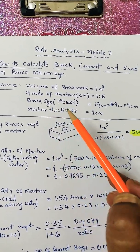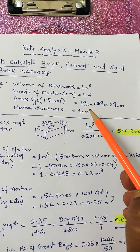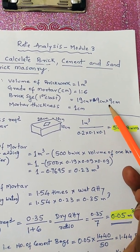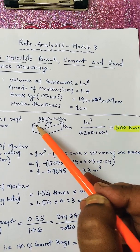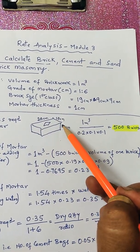Then brick size first class bricks of 19 centimeter by 9 centimeter by 9 centimeter. This is 19, 9, 9.